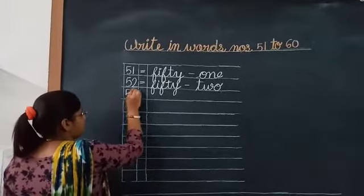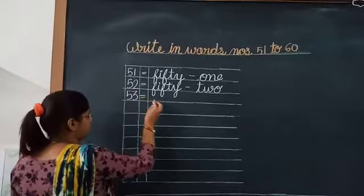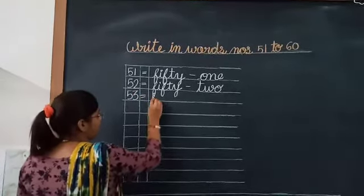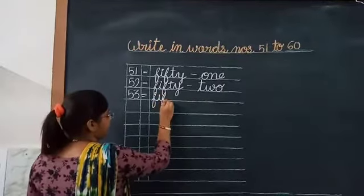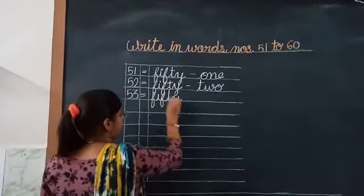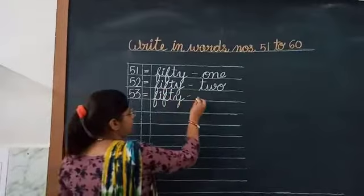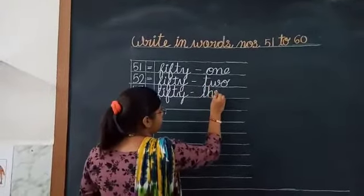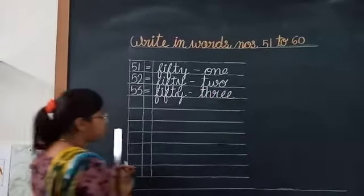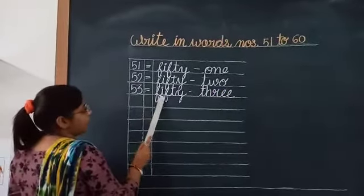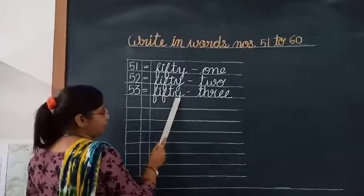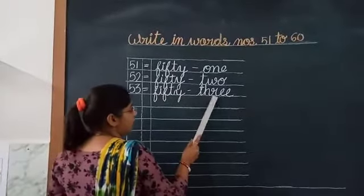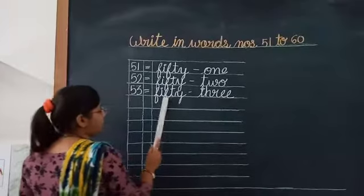Next is 53. F-I-F-T-Y, 50. What is the spelling of 3? T-H-R-E-E. 53. F-I-F-T-Y, 50, T-H-R-E, 3. 53.